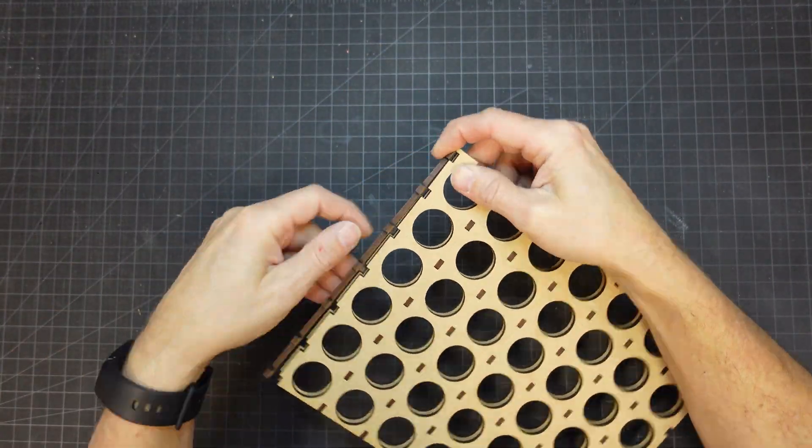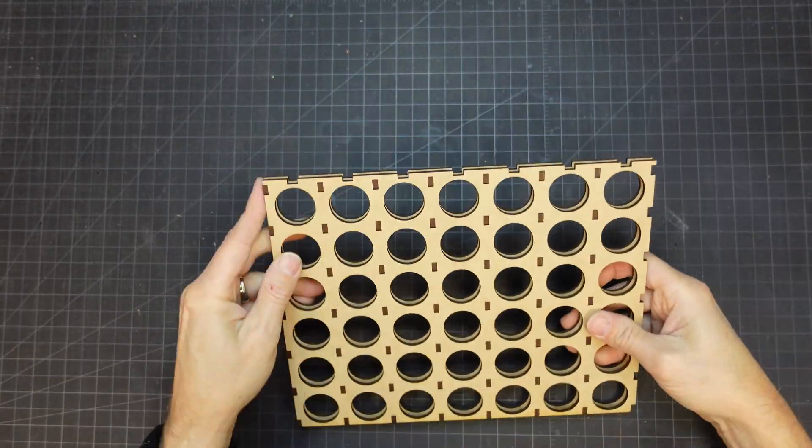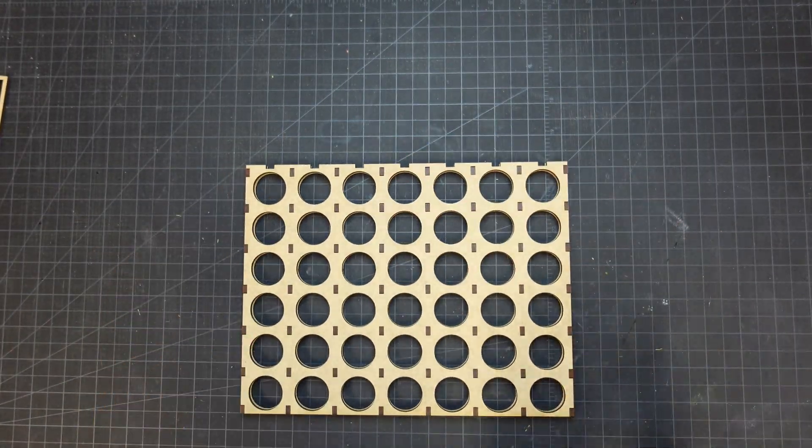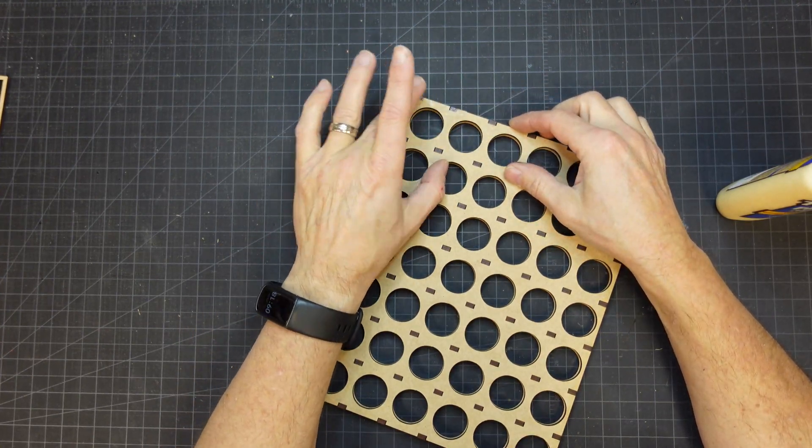The vertical side pieces were inserted and then I ran glue along all the connection points. I just used regular wood glue for all of this assembly. I didn't have to be too neat here.